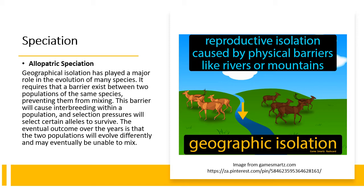If you look at the image here, we can assume this used to be the same species of animals. But for some reason, a river started to flow through the gorge, resulting in them being separated from each other. Assuming they are unable to cross the river, that would result in them evolving differently. The ones on the right are darker in color while the ones on the left seem to be lighter. Because of this barrier, those on the right unable to cross will have to mate with each other, causing inbreeding and certain selection pressures to act on the population.